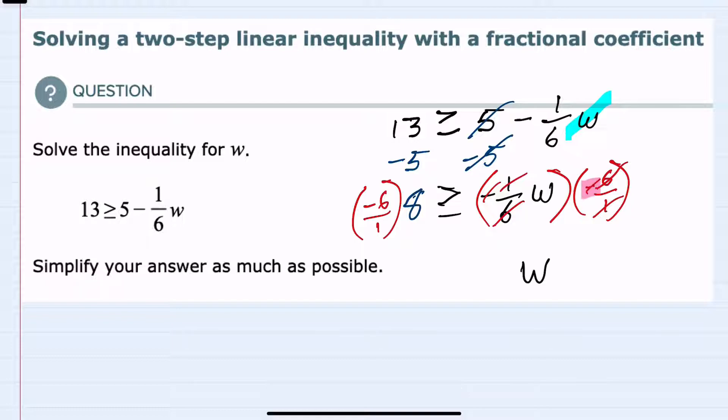However, since I multiplied by a negative, I have to recall that when I multiply or divide by a negative, the direction of my inequality changes. So this would now be a less than or equal to sign.